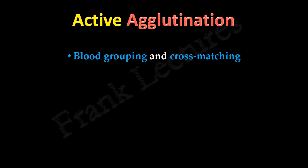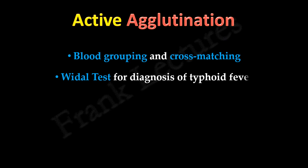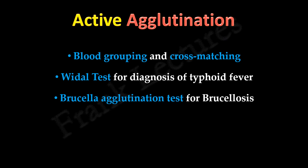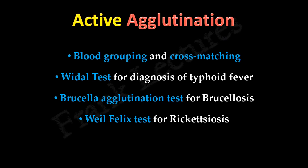Active agglutination tests are also used for blood grouping and cross-matching before blood transfusion. Other examples of active agglutination in diagnostic immunology are the Widal test for diagnosis of typhoid fever, Brucella agglutination test for brucellosis, and the Weil-Felix test for rickettsiosis.